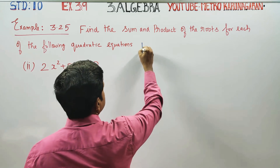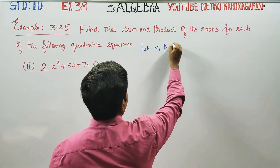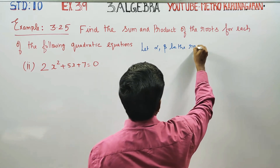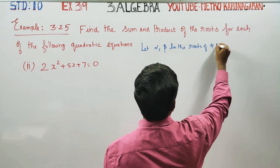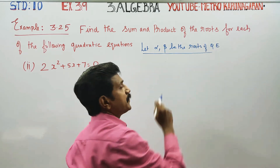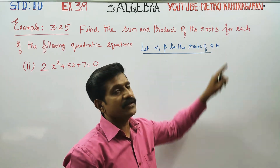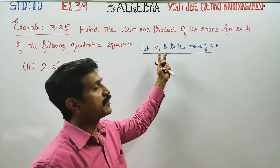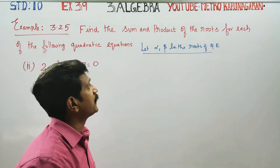You know, let alpha and beta be the roots of the quadratic equation. The quadratic equation has roots alpha and beta — that is 2 answers, 2 solutions, 2 roots. Alpha is 1, beta is 1.